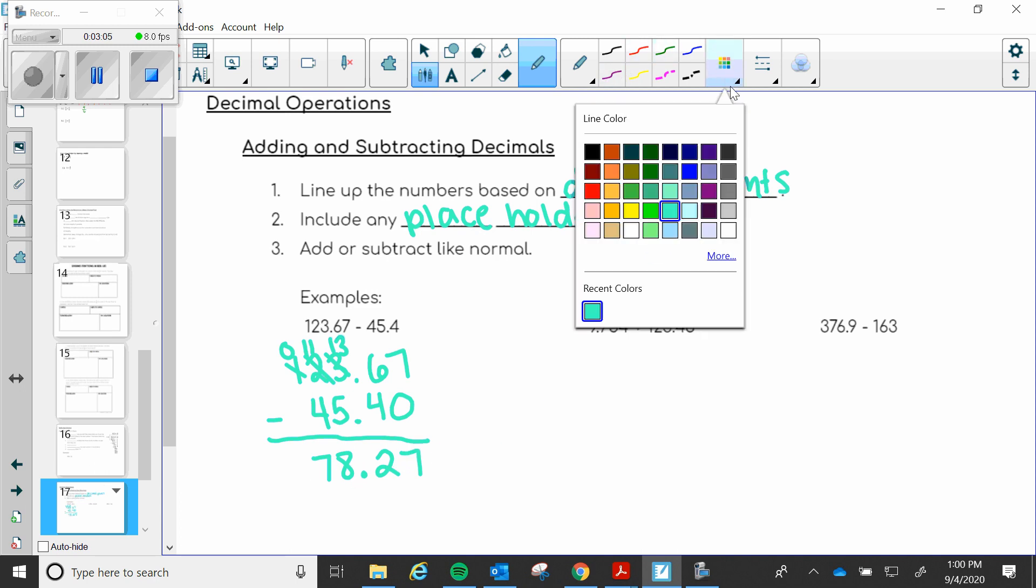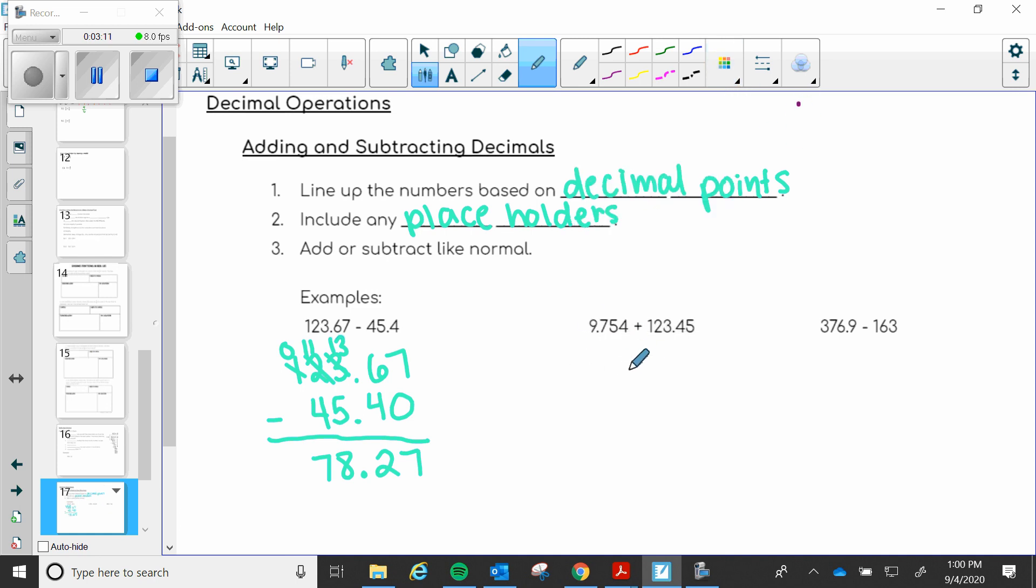Now let's move on to our second problem. So again we're going to line up our decimal points and then we'll include any placeholders after that. So our first number 9.754 and then I'm going to go ahead and put my decimal point for my second number and I'm going to write the numbers around it to make sure they line directly above or underneath the other number. So then this is a three, two, one and now I need a placeholder.